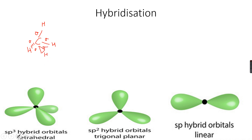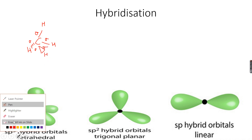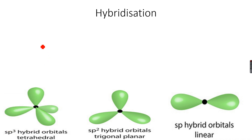Now that we're done with SP3 hybridization, the bond angles will be 109.5 degrees. Remember that for SP3 hybridization.